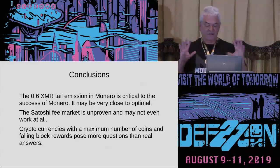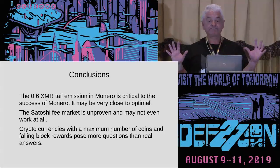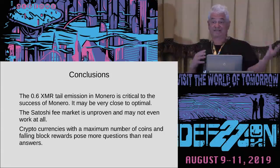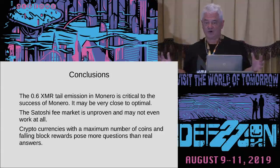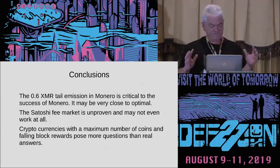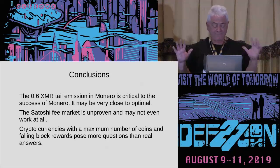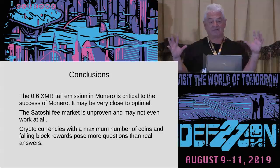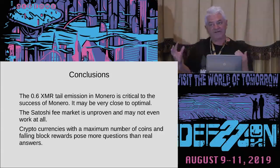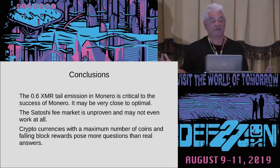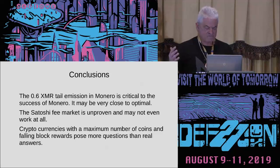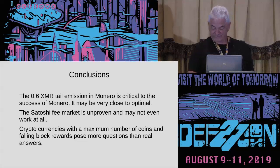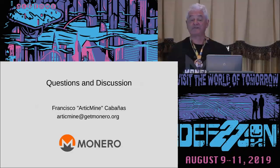My conclusion: Monero's tail emission is absolutely vital — it actually makes Monero work. It may be very close to optimal because the inflation amount is less than the historical inflation rate of gold, which is considered hard money, so the hard money argument is handled. The Satoshi fee market is totally unproven; it may not even work at all. The best chance is in Bitcoin with a small block size, but there is no evidence for this — only lots of evidence for a cryptocurrency working with a block reward. At this point I'm ready to take questions.